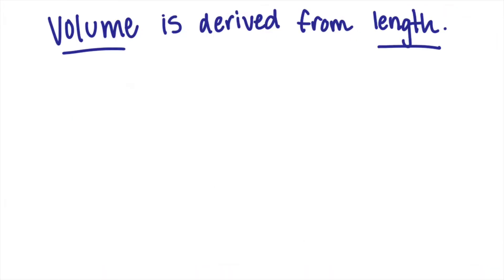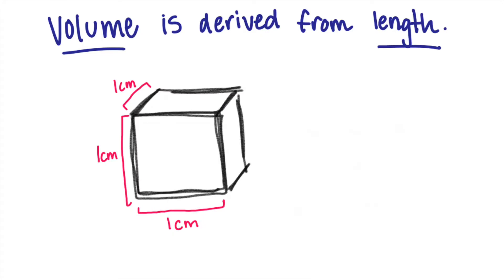That's because volume is derived from length, meaning if we measure the length, width, and height of a cube, we can multiply those values together to get volume. The volume of one cubic centimeter is equal to one milliliter.